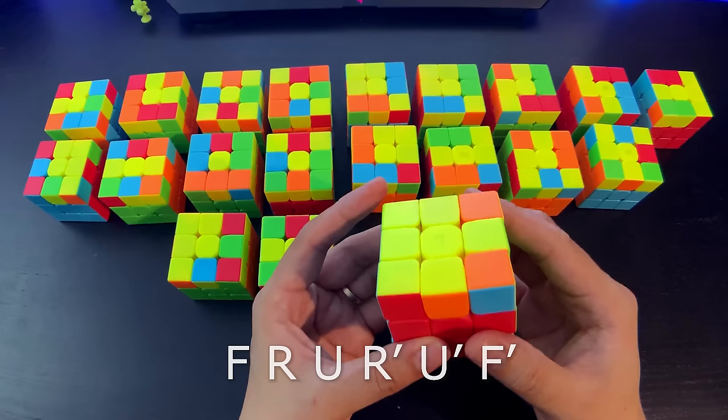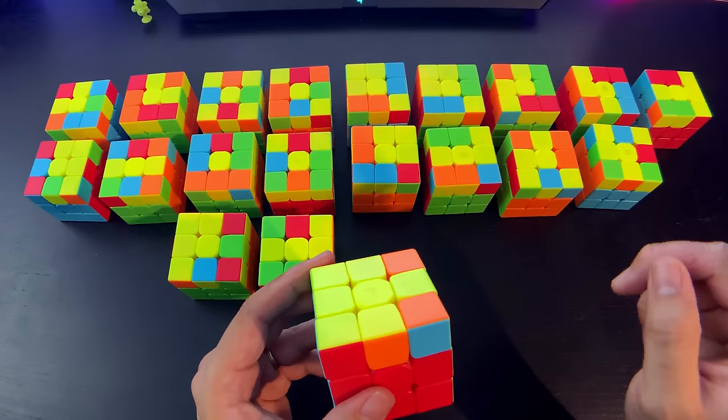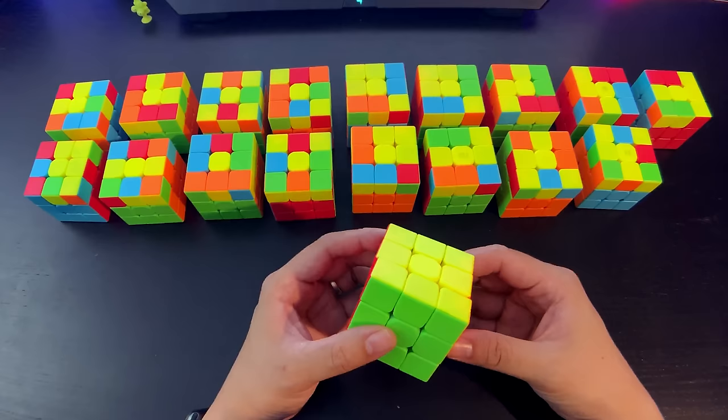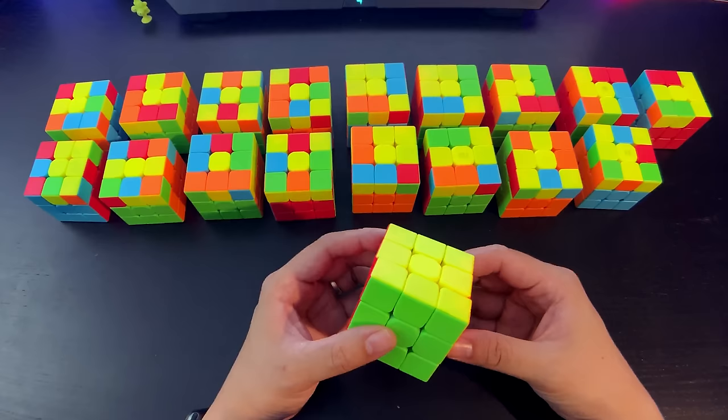The next step for me was to find out which OLLs will be solved just knowing that. FruRuff and Ruff Fur was the two ways that I called it, and it was these two. So this one is solved by front sexy front prime, and this one over here is solved by front inverse sexy F'. Just like that, I already knew nine cases out of the 57.